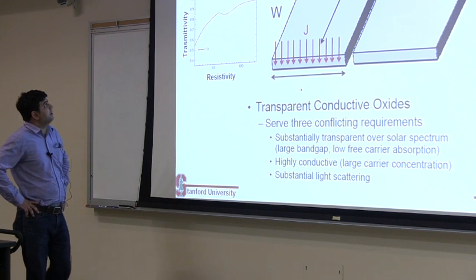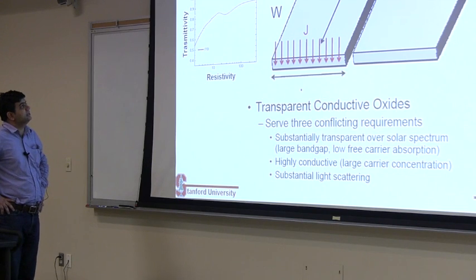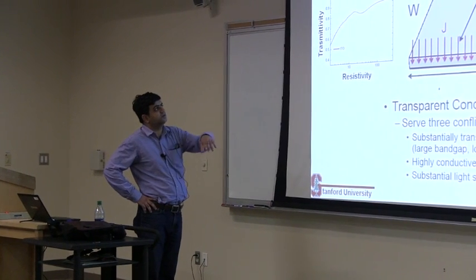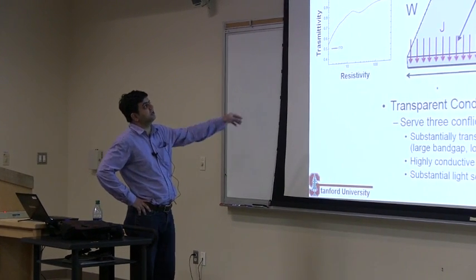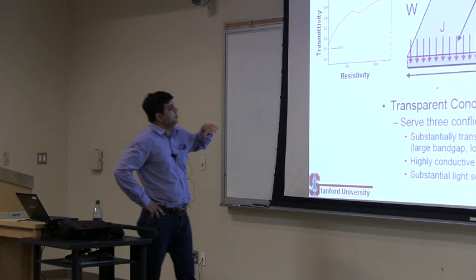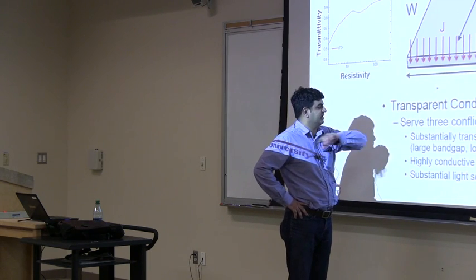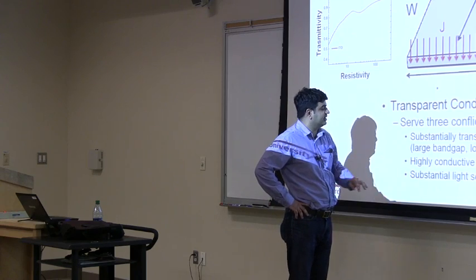And the requirement you have on these is that you want these to be very low in sheet resistance so that you don't have too much resistive loss and you can collect all your carriers. But at the same time, you want them to be transparent throughout the solar spectrum, and then you want them to be highly conductive.